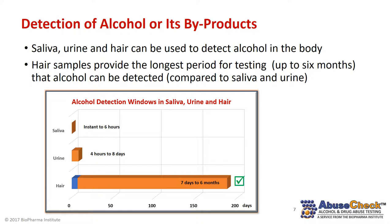What about testing saliva or urine? Those specimens can be useful, but they have definite limitations and are best used to assess alcohol that may be in the system at the time of the test. Saliva can only be used up to six hours, urine for periods four hours to eight days. Neither saliva nor urine can be tested in a way that provides retrospective results. Hair testing provides the longest testing window, up to six months, and is most useful when the decision to test is made at a point after the alcohol has been consumed.